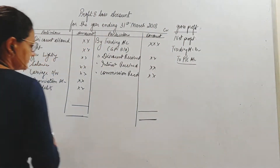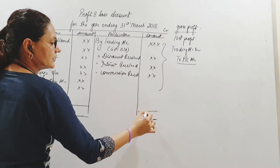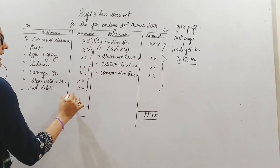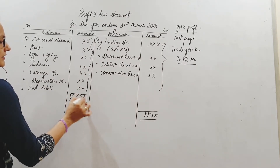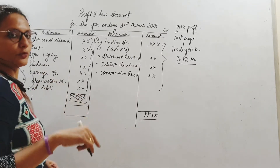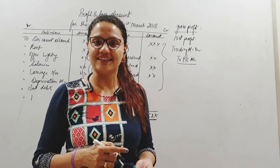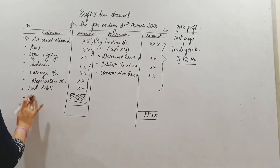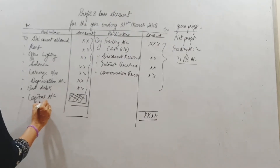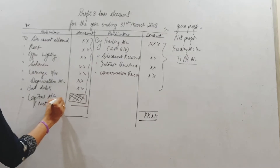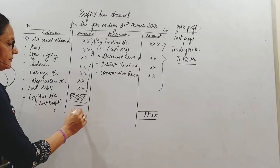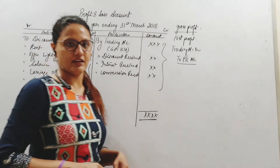The balancing figure — net profit — is calculated by subtracting all indirect expenses from total income. This net profit belongs to the owner, the proprietor, and it is transferred to the capital account. His capital account will be credited with the net profit. That's how we calculate and close the profit and loss account — the totals on both sides will be equal.